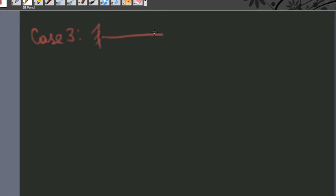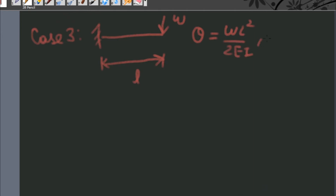Case number three: when a cantilever beam of length L is subjected to a point load W at its free end, then the angle of twist theta is equal to WL squared upon 2EI, and deflection Y is given by WL cubed upon 3EI.